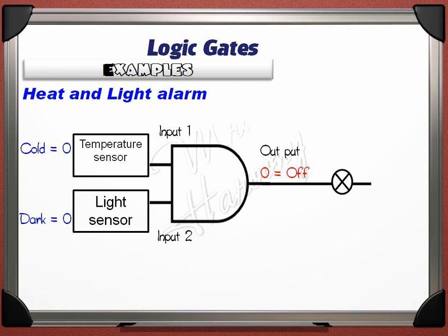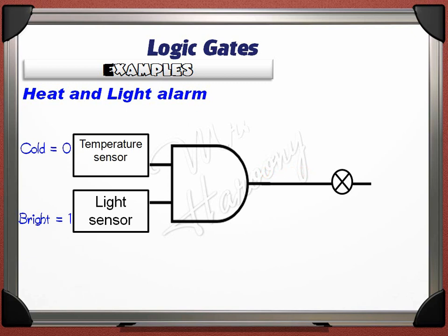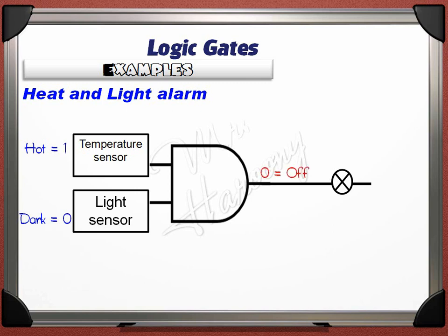If it is cold and bright, the inputs are 0 and 1 — the AND gate gives 0 and no alarm is given. If it is hot and dark, the inputs are 1 and 0 — the AND gate again gives 0 and no alarm. If it is hot and bright, both inputs are 1, the AND gate output is 1 (ON), and the bulb lights, giving the alarm.